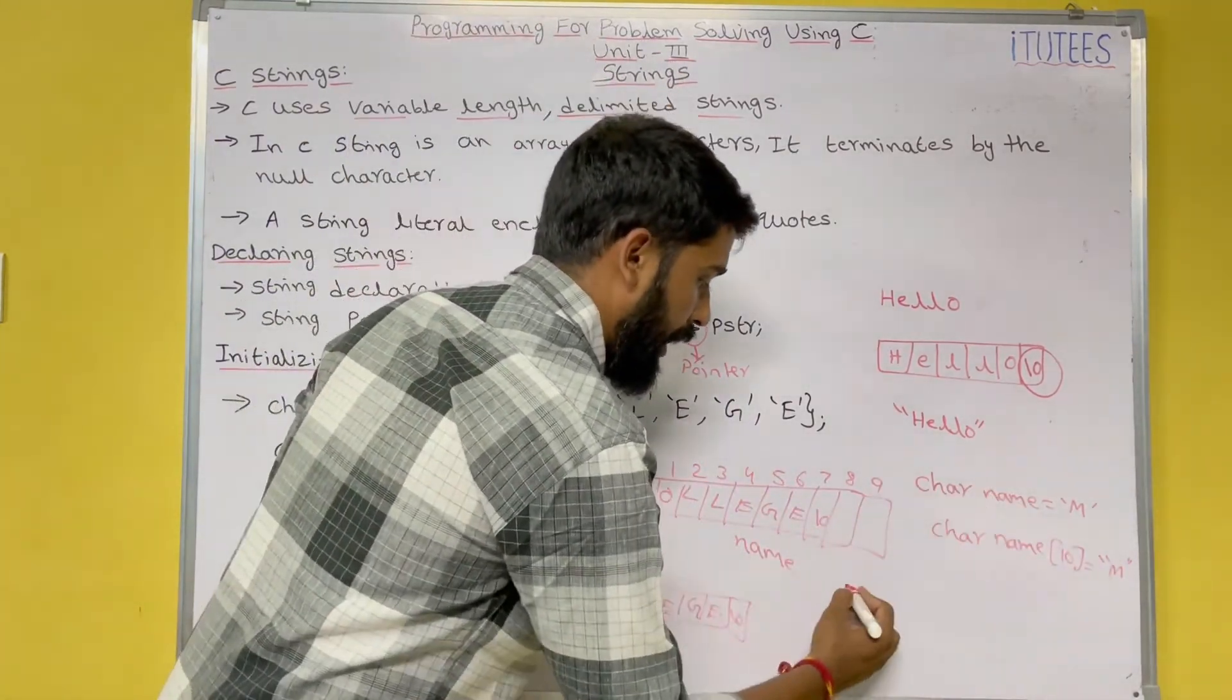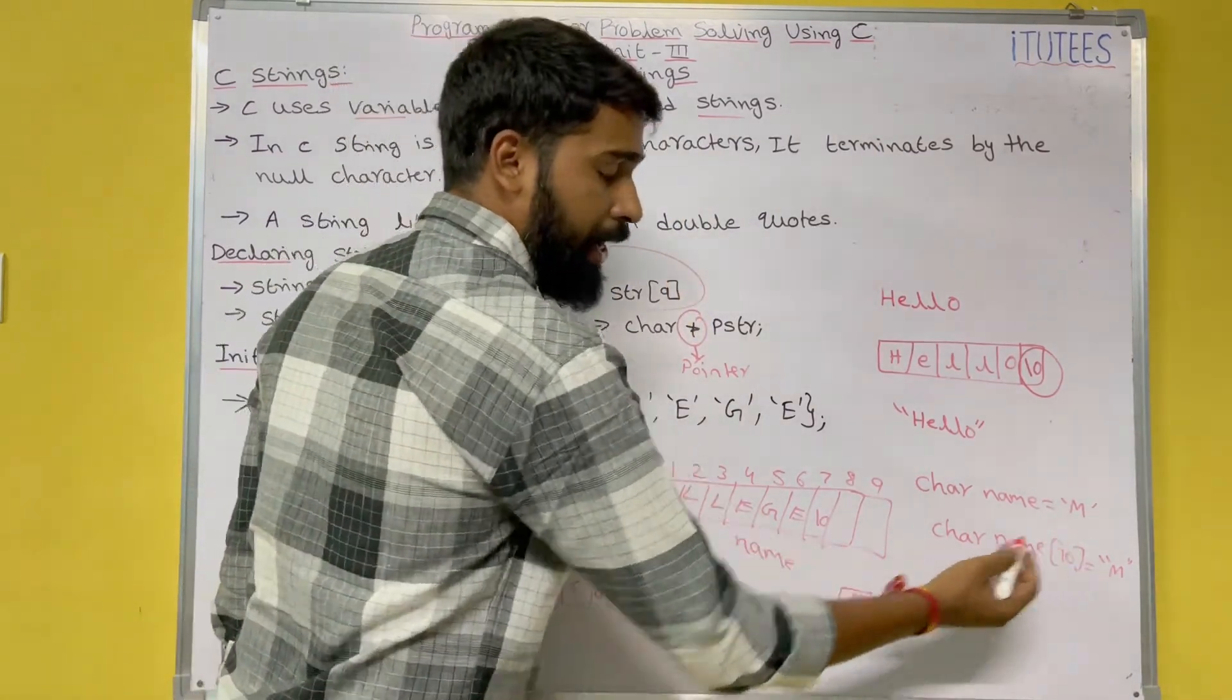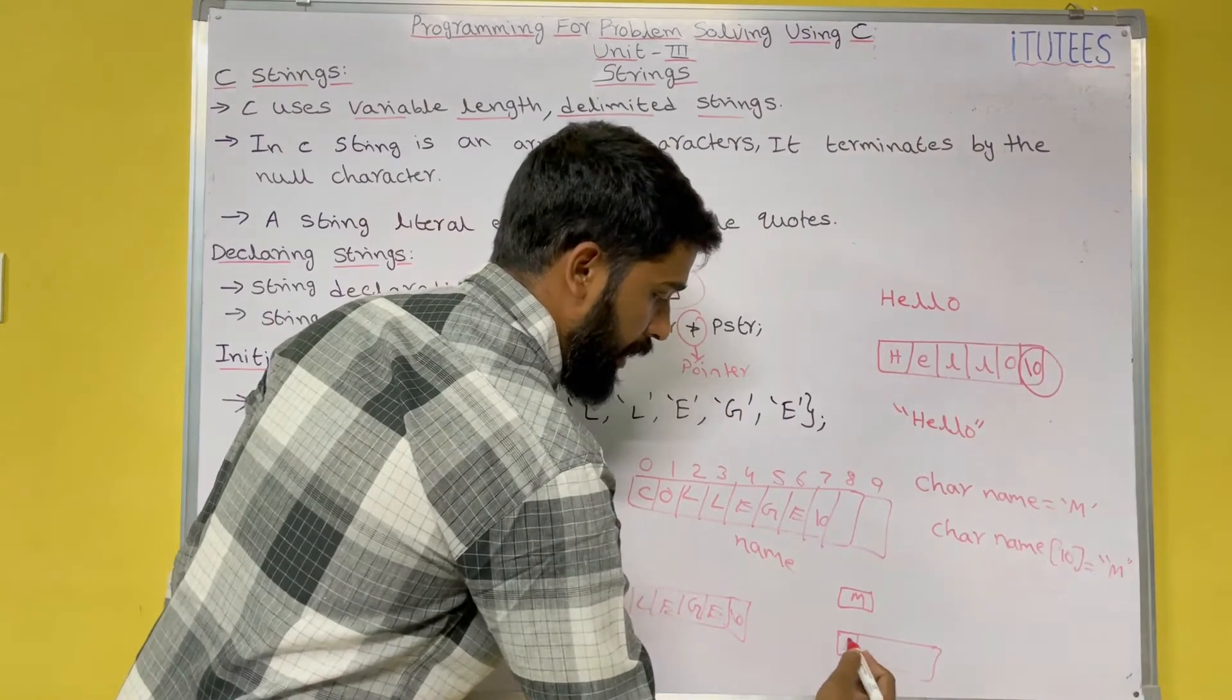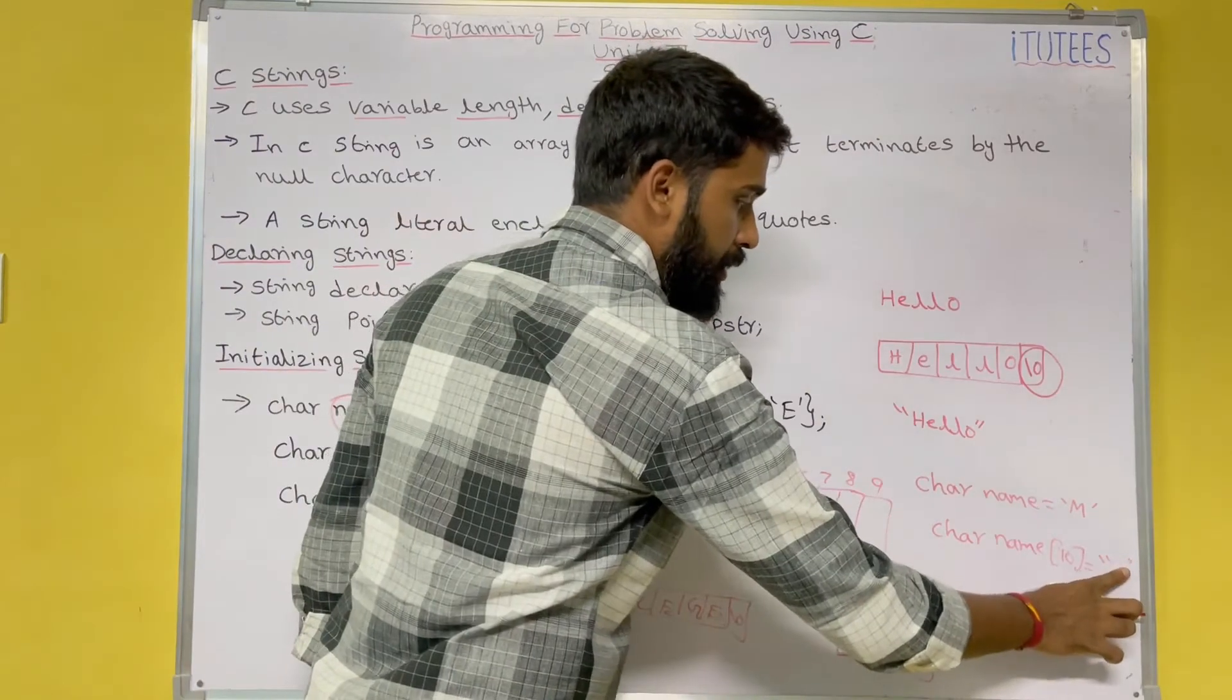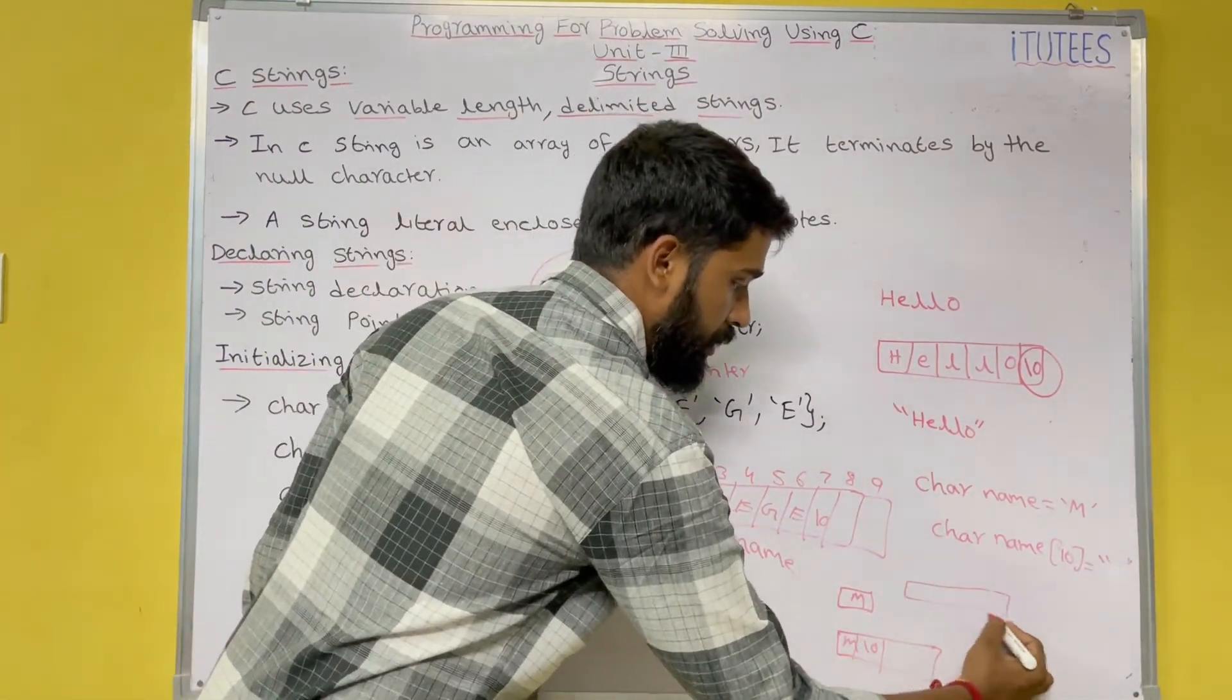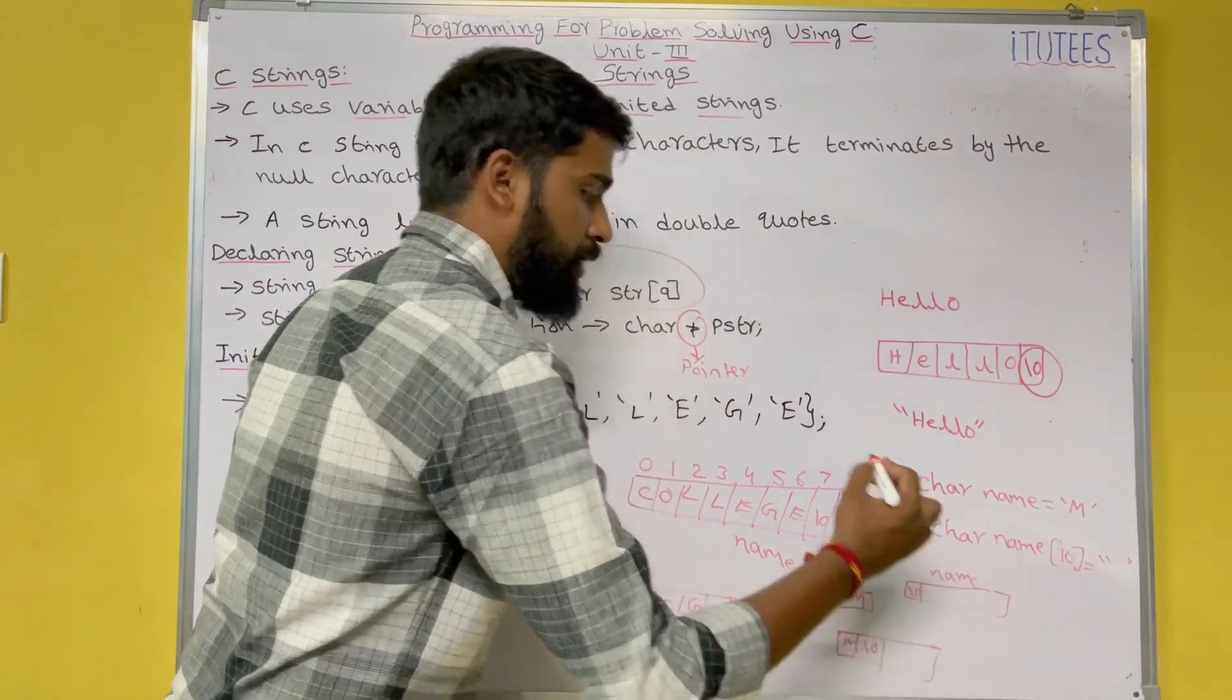So how we can represent, char name equals to m, it stores like this. So char name of 10 equals to m, now it stores like this. So this is the name, so it is m, so the first location is slash zero.